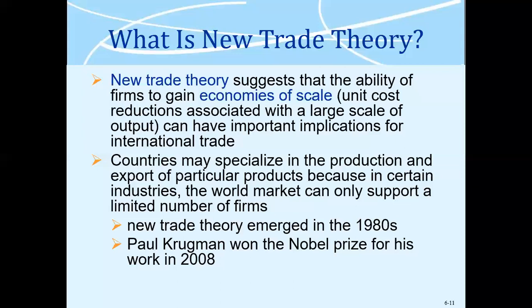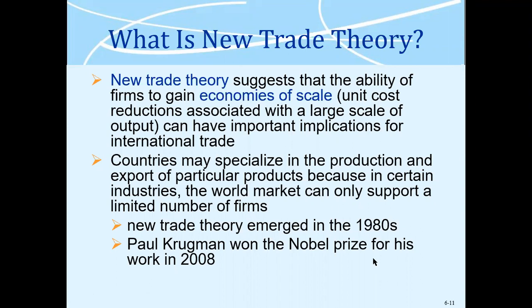A lot of theories all come together in the production of those goods and services that China is producing and exporting to other countries. This economy of scale was called the New Trade Theory, and it was such a revolutionary idea that it was given a Nobel Prize. Paul Krugman, who actually came up with this idea, was given a Nobel Prize for this.